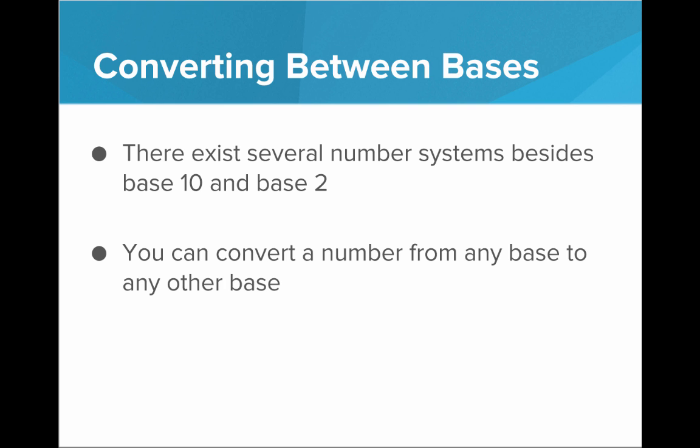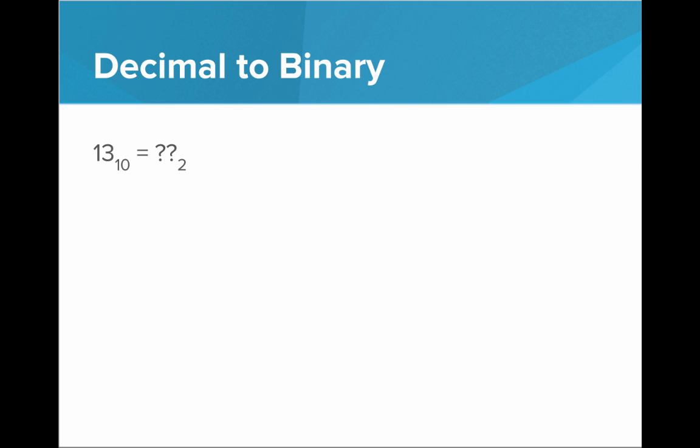And you can convert a number from any base to any other base using math similar to this. So we've seen how we can convert from base 2 to base 10. Now let's see how we can convert from base 10 to base 2, converting from decimal to binary. So let's take a simple example. What is the value of 13 base 10 written in binary?